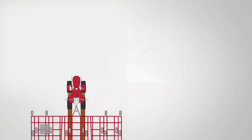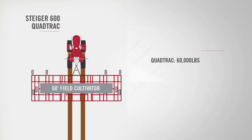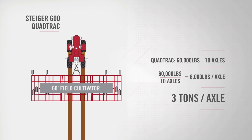For example, let's take a 60-foot field cultivator pulled by a Steiger 600 QuadTrack. The tractor weighs 60,000 pounds and has 10 axles. If you divide that 60,000 pounds out over the 10 axles, that's 6,000 pounds or 3 tons per axle — much lower than the recommended amount of 10 tons or less per axle, minimizing your chances of causing deep compaction. Deep compaction will result in permanent yield loss, so to minimize that deep compaction, let's look at reducing traffic across our fields.